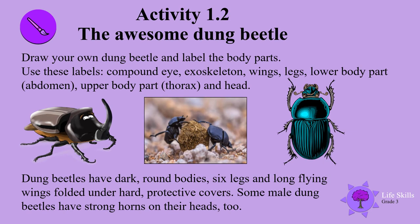The awesome dung beetle! Draw your own dung beetle and label the body parts. Use these labels: compound eye, exoskeleton, wings, legs, lower body parts, abdomen, upper body part, thorax, and head.